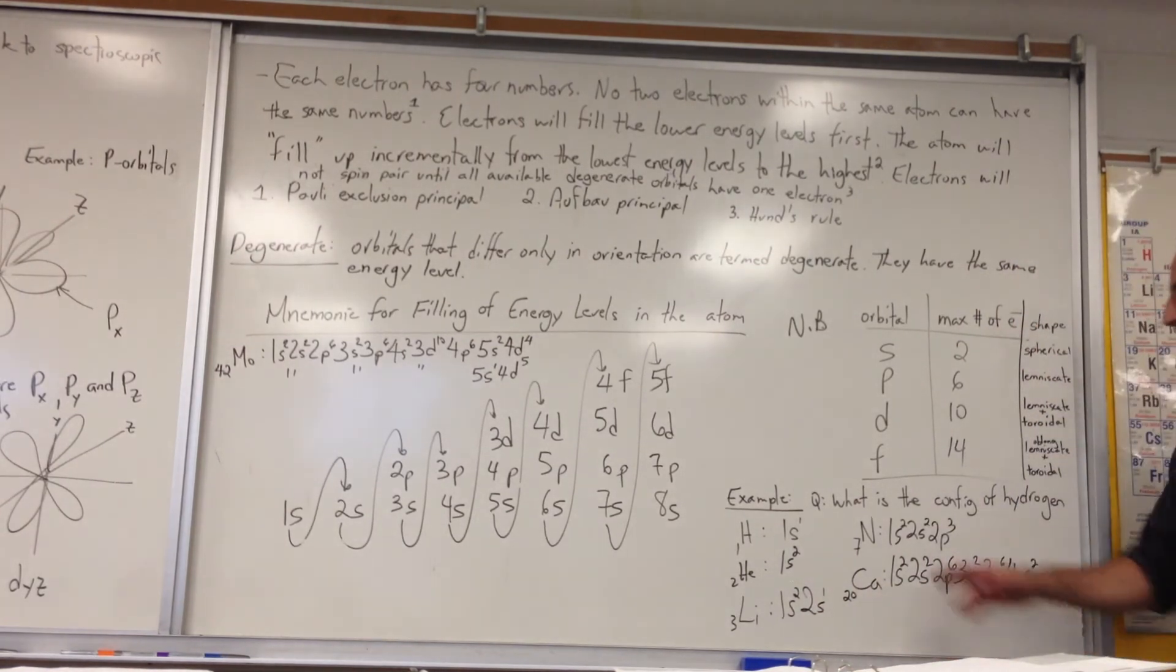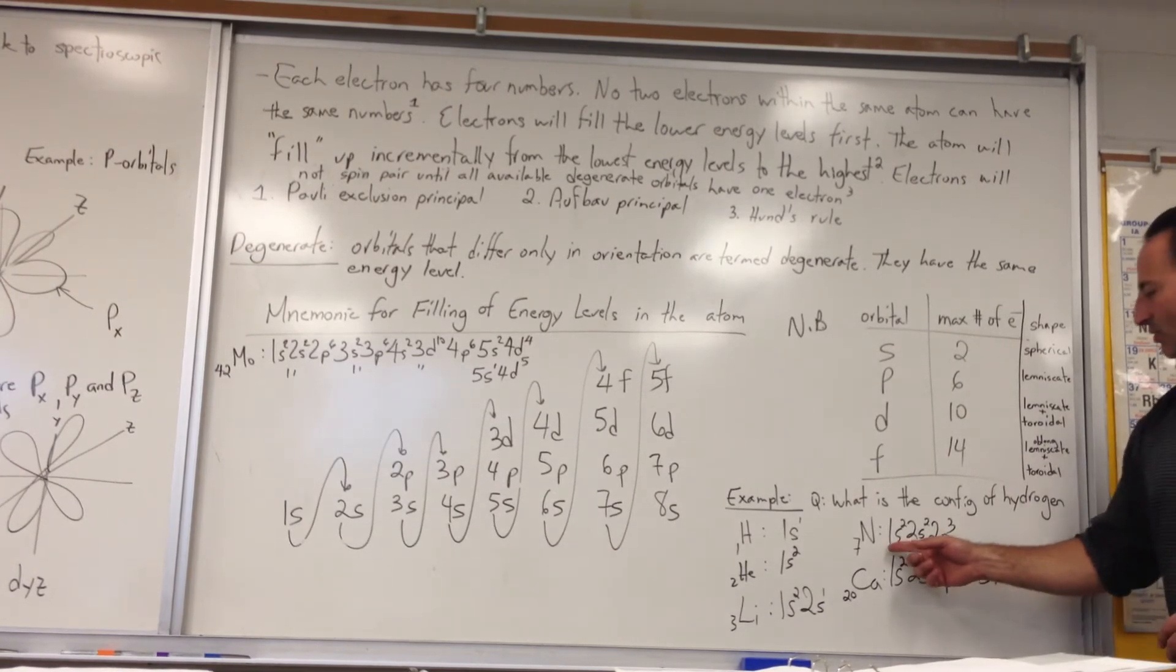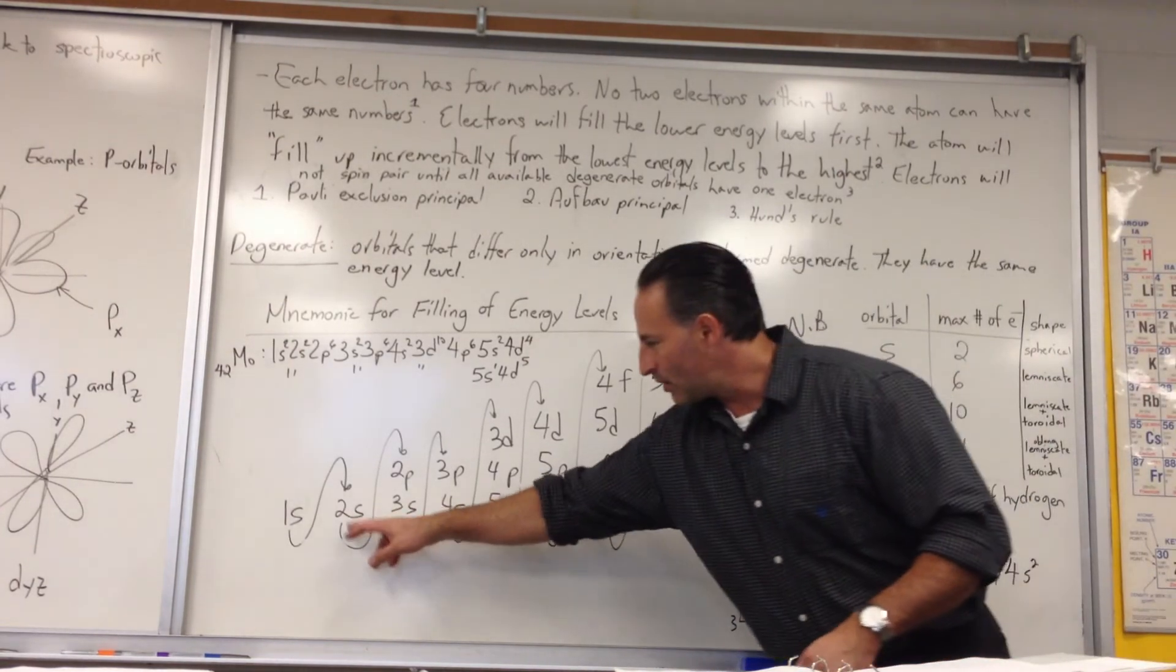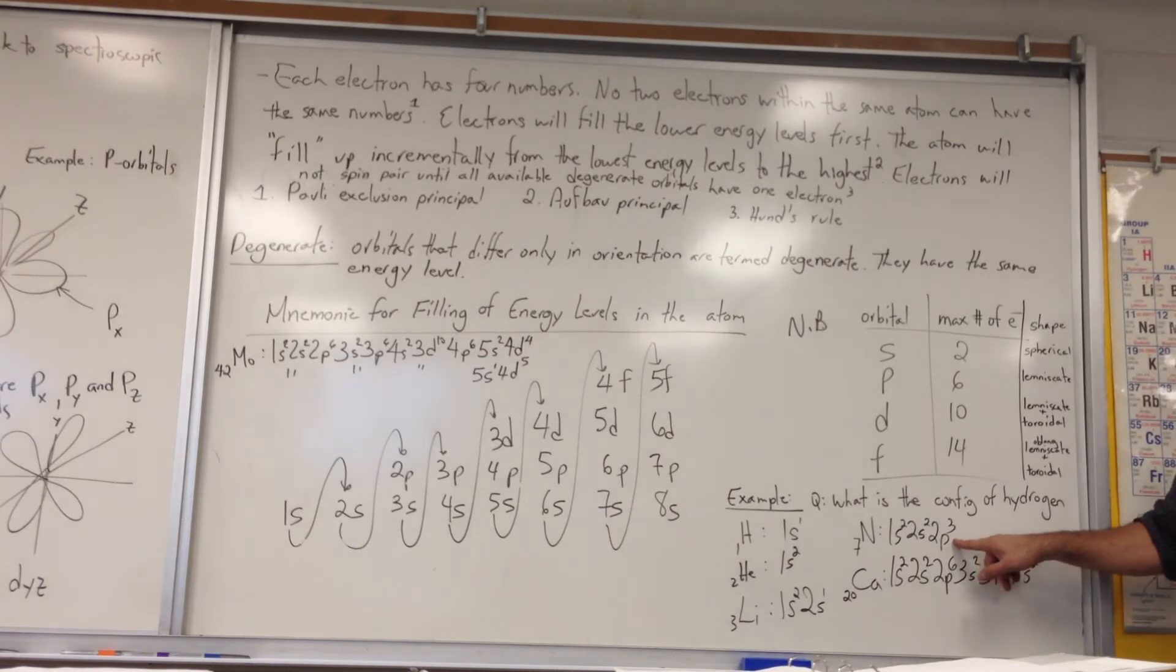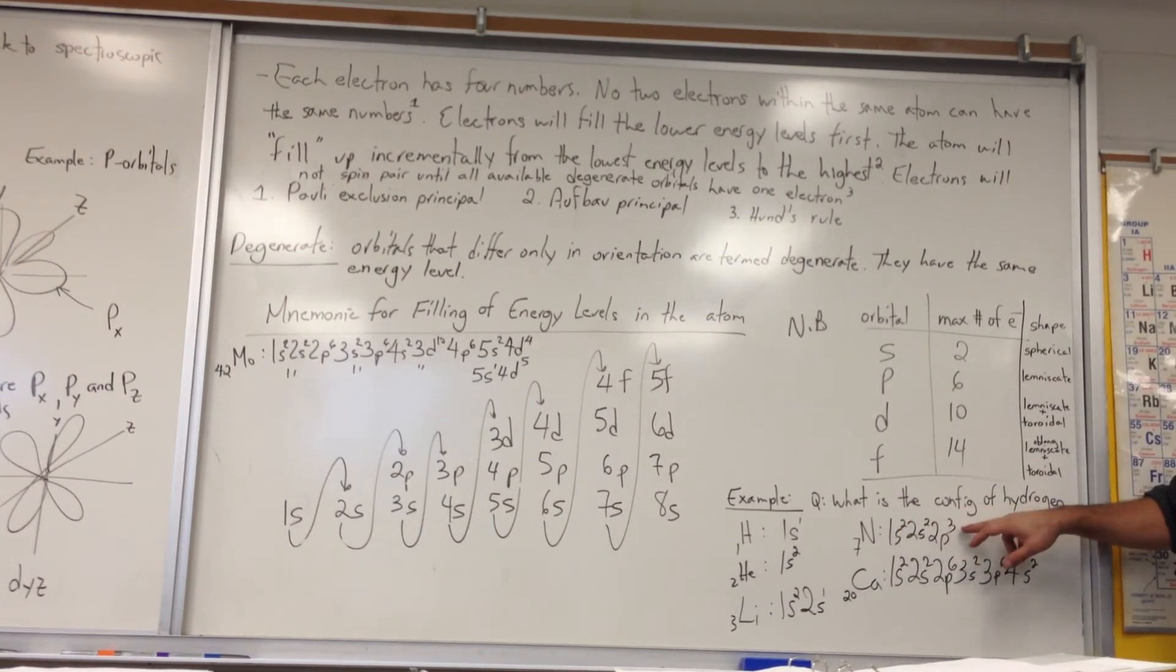With nitrogen, nitrogen has seven protons and seven electrons. If it's neutral, it's going to fill, again, follow the pattern, 1S2, 2S2, and then the next level is 2P. It's going to have three electrons in the P level, so the total number of electrons is two plus two plus three, seven electrons. There's the configuration of nitrogen when it's in the ground state.